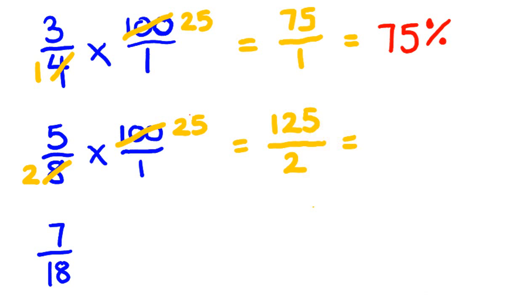So this is 125 divided by 2. I'm just going to do this by division—1 divided by 2 we can't do, so we're left with 12 divided by 2, this is 6. And 5 divided by 2 is 2 and there's 1 left over, and we put this 1 over the 2, so we've got 62 and a half percent.